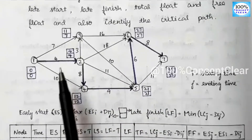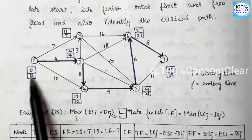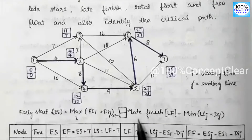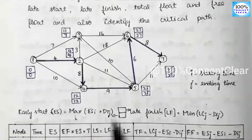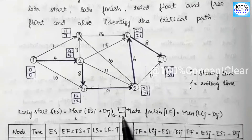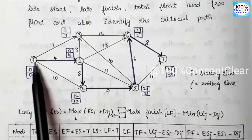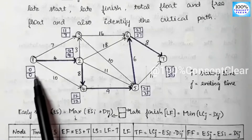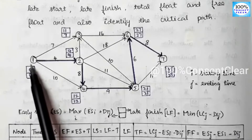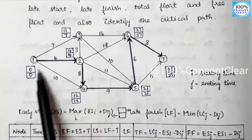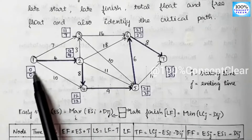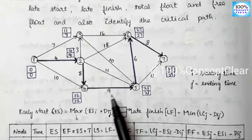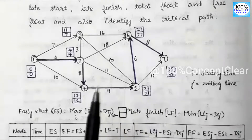For slack time, the formula is Late Finish minus Early Start. For critical activities, the small and large values in the box are equal, so slack equals 0. On the critical path, Early Start and Late Finish are equal — this is the key condition for identifying critical activities.